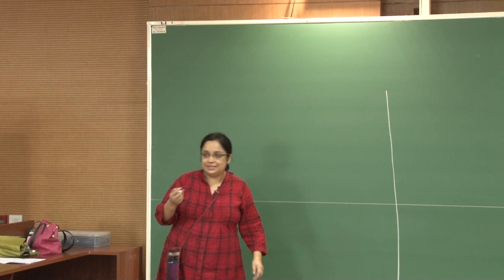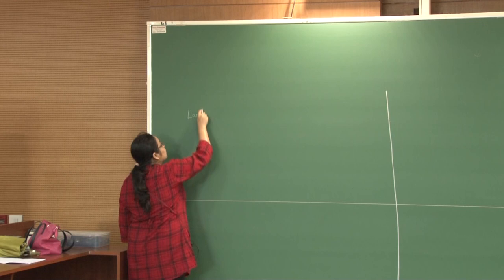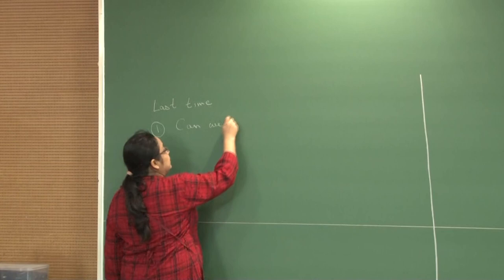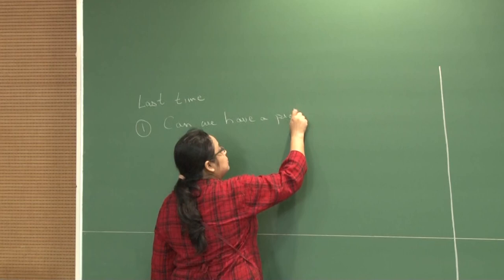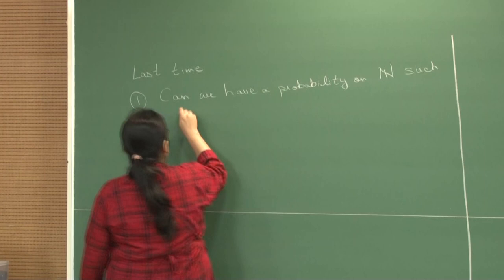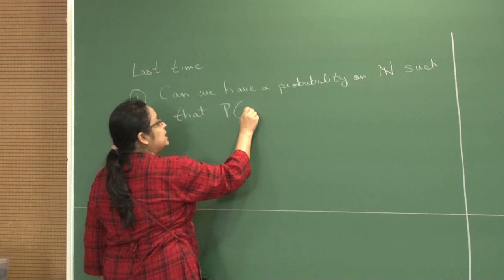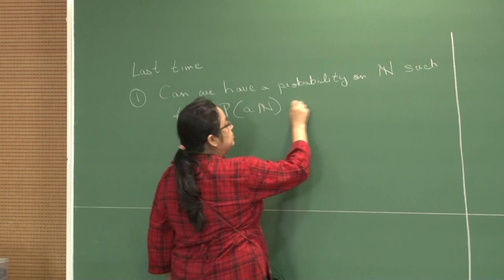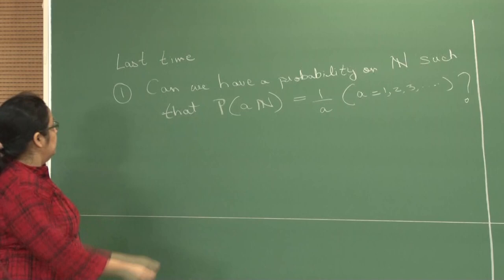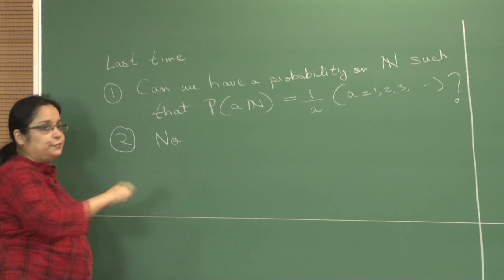Let's start today's lecture with a brief review of what we learned last time. We asked the question whether we can have a probability on ℕ such that the space of all multiples of a in ℕ would have probability 1/a for any a — 1, 2, 3, and so on. The answer was no, and this is the reason why we need probabilistic number theory.